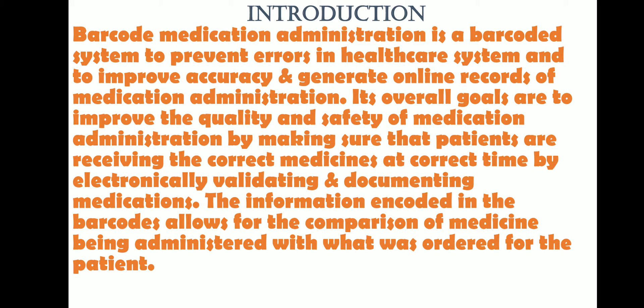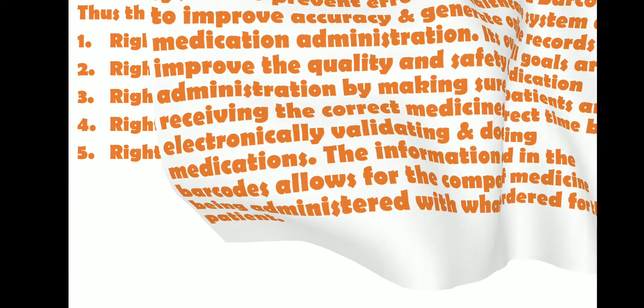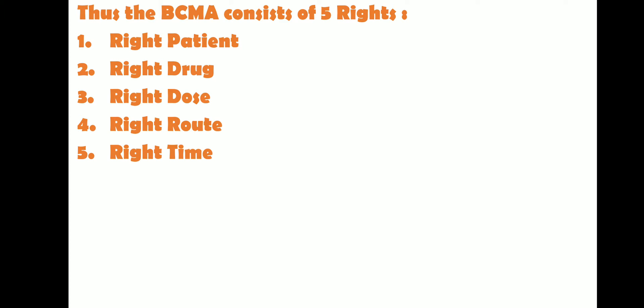The barcode is used to compare the medicine information, and the patient's wristband barcode is scanned. The information is compared to the medicine information. According to this system, you ensure five rights: right patient, right drug, right dose, right route, and right time. These five things must match.